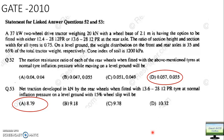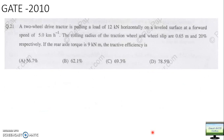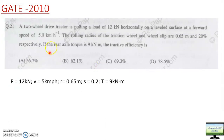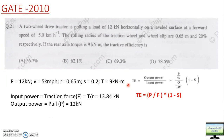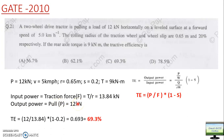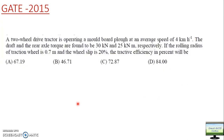Again they asked a tractive efficiency question. Data given: pull of 12 kilonewtons, speed of 5 km/h, rolling radius of 0.65 meters, slip of 20%, and torque of 9 kilonewton-meters. Tractive efficiency is output power divided by input power - input power is torque divided by rolling radius. The correct answer is 69.3%.